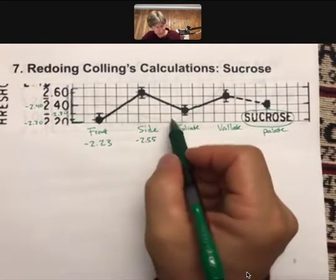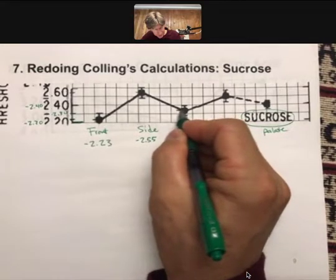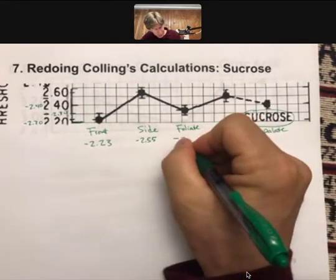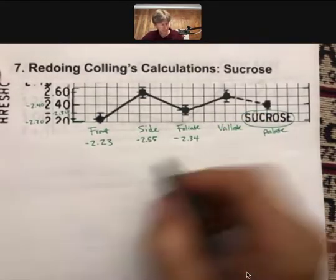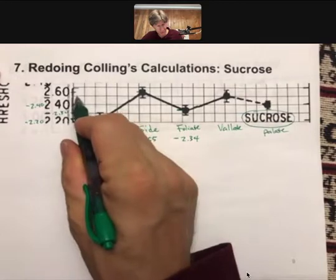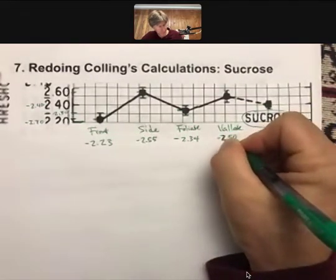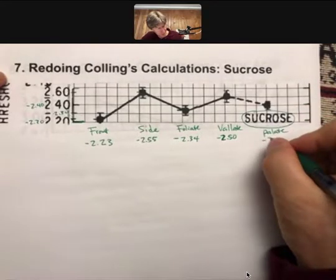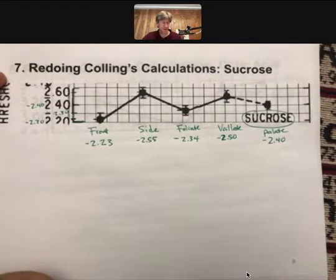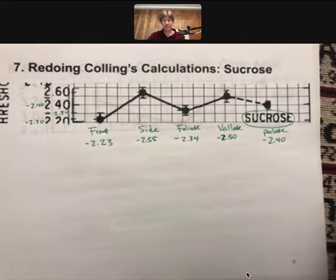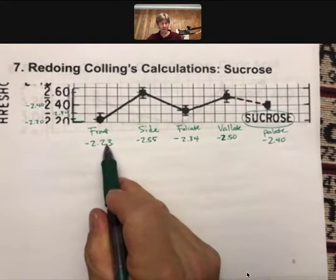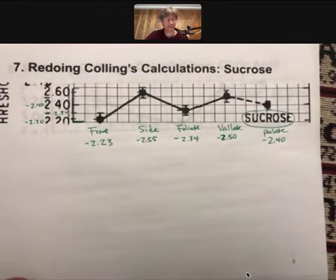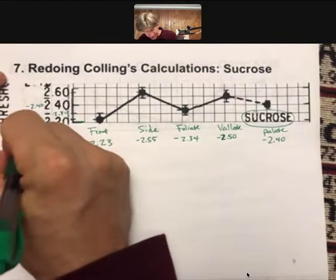Foliate — they're all minuses — I'm going to go 2.34. Vallate looks right on the 2.5, so I'll do 2.50, though 2.5 is fine for this class. And then here this looks right on minus 2.40. I'm giving two decimal places for precision, but one is fine if it's a zero. For the others where it's not right on the line, you should give one more decimal place to help with accuracy. These are all log of the molarities.